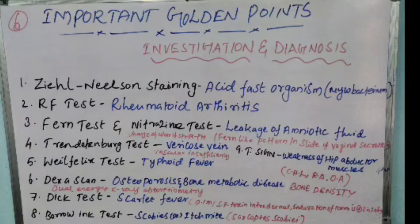Fourth point is the Trendelenburg test, used to find out varicose vein or vascular insufficiency. Note that the Trendelenburg test is different from the Trendelenburg sign. The Trendelenburg sign is used to find out weakness of the hip abductor muscles, specially in congenital hip dislocation, rheumatoid arthritis, and osteoarthritis.